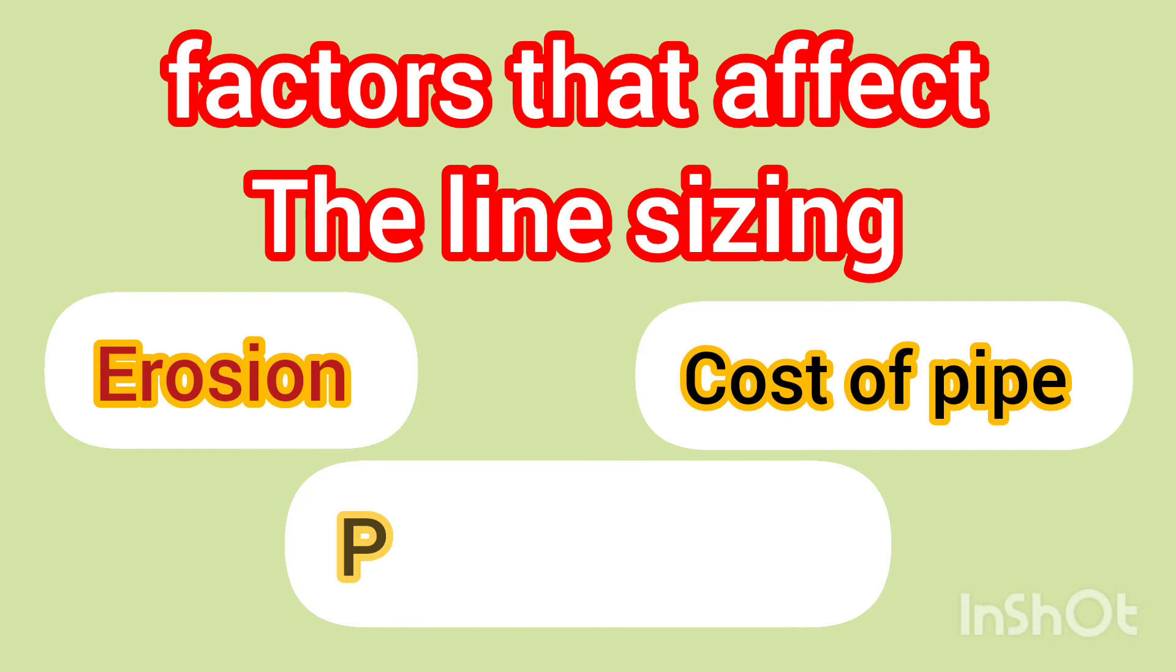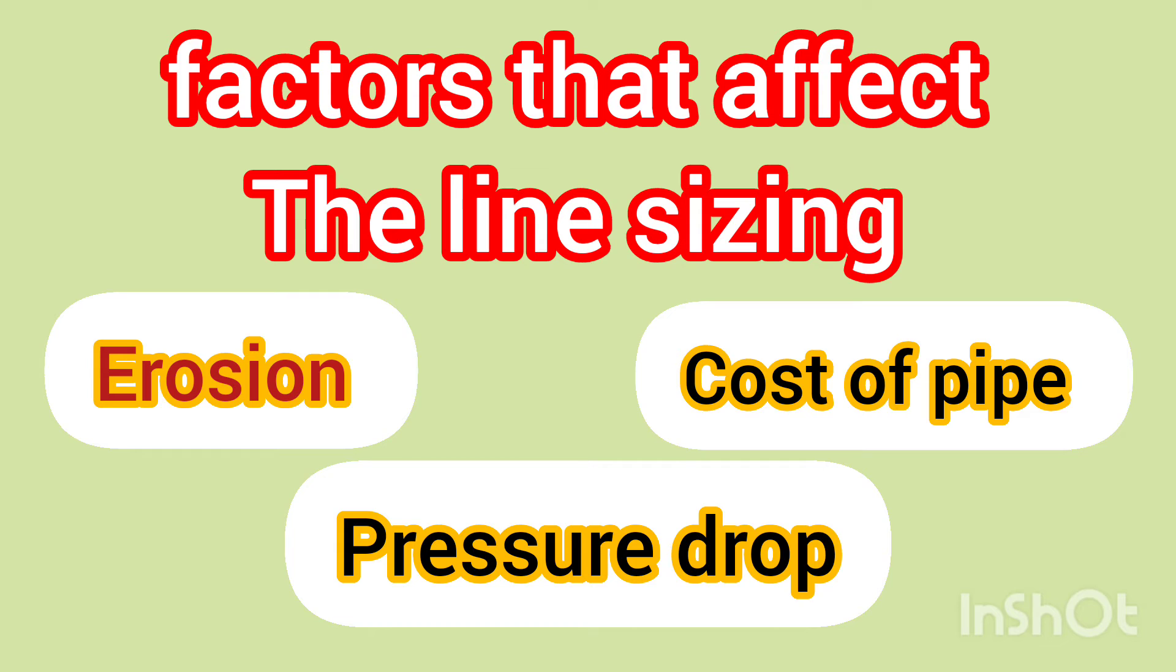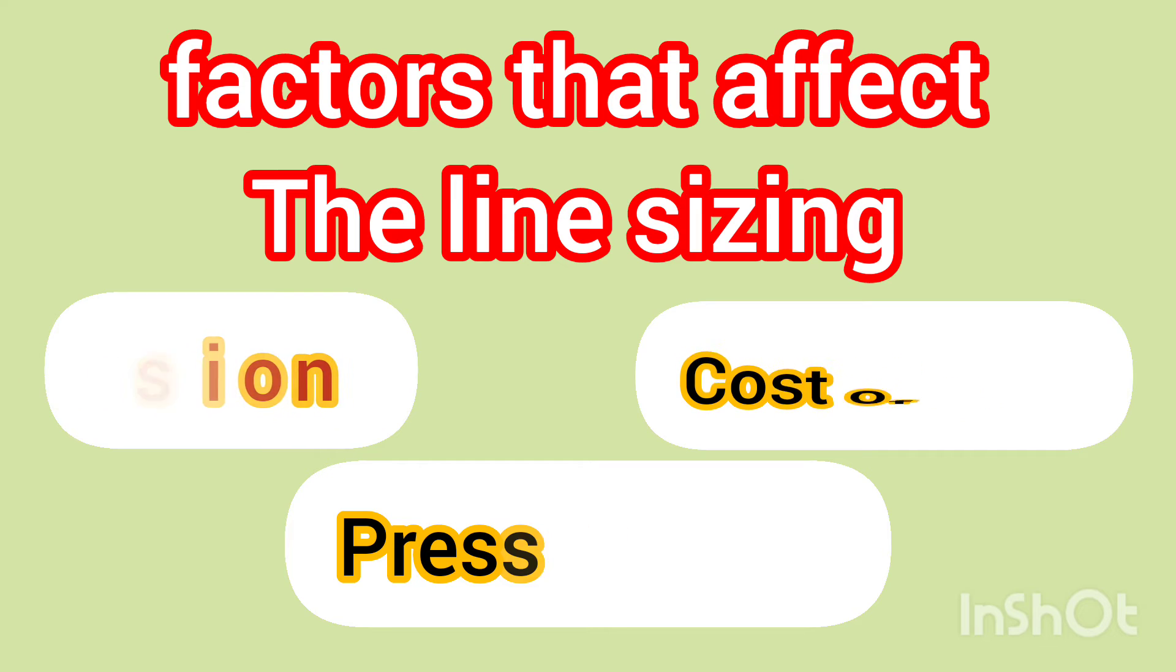Pressure drop is the reduction in fluid pressure as it flows through the pipeline. An improperly sized pipe can result in excessive pressure drop, affecting system performance.